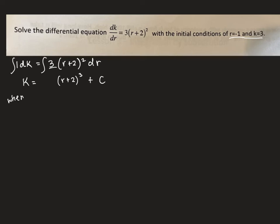Now to figure out what C is we use the initial conditions that were given, that when r equals negative one, k equals three.